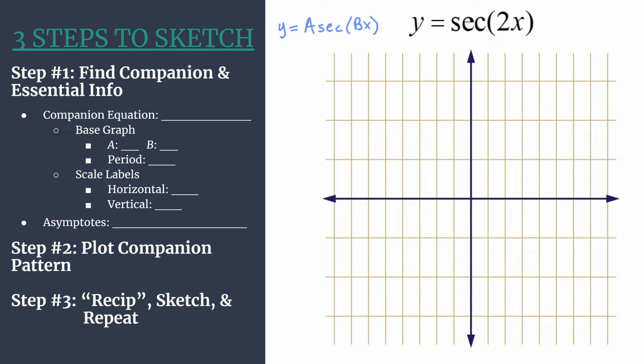So right now we can jump into step one where we find our companion equation, and this is what we'll graph first and then take the reciprocal to get to the secant graph that we want. And then we'll find all the essential information for that, as well as the asymptotes for our secant graph.